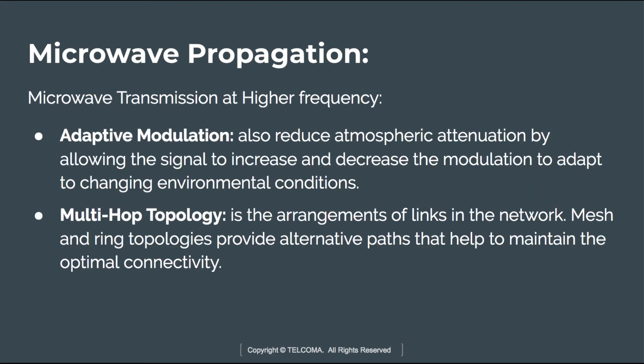The next part is adaptive modulation. Adaptive modulation techniques are used to reduce interference and atmospheric attenuation by allowing signals to increase or decrease their modulation level to adapt to changing environmental conditions. The modulation compresses the data stream over the link, reducing modulation to improve fidelity in poor conditions and increasing it to maximize capacity in clear conditions.